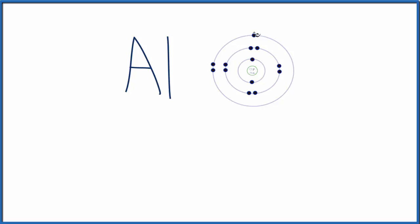There's one, two, three valence electrons. So to draw the Lewis structure, we could just put one, two, three electrons around aluminum, and that would be the Lewis structure for aluminum.